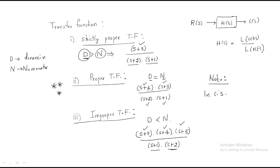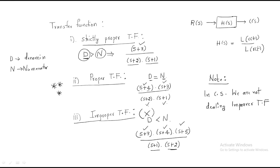In control systems, we generally do not deal with improper transfer functions. We always work with strictly proper and proper transfer functions. If a transfer function is in improper form, we will convert it into another form. These are the three different types of transfer functions.